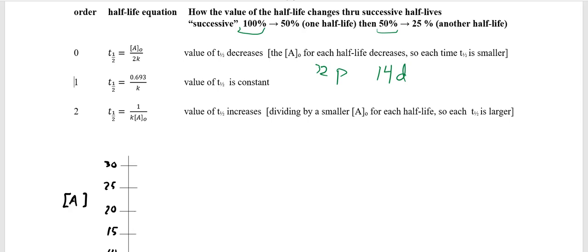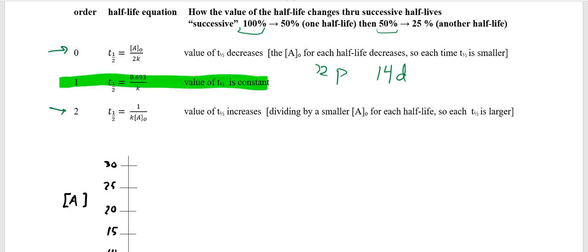But in the first-order equation, there is no concentration, so the half-life's a constant. But if you look in the other two, there is a concentration term. It's right here on top, right there on the bottom. So we're going to have to explore that with some graphs. The easiest one we'll talk about first, though, is the first-order one.